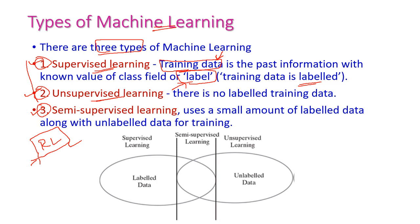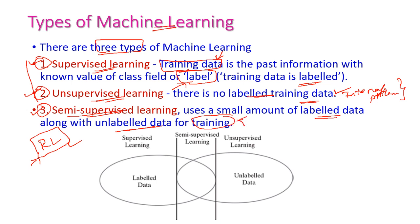In unsupervised learning, there is no labeled training data. The machine itself will understand the internal pattern of the data and accordingly it will cluster or group the data. In semi-supervised learning, it uses a small amount of labeled data along with a large quantity of unlabeled data, so the training data has both labeled and unlabeled data.